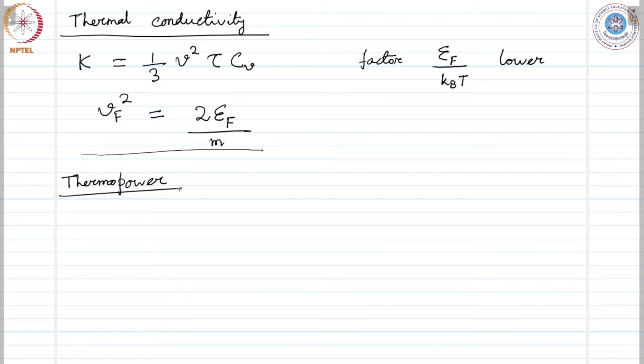From the expression of specific heat we can write the expression for thermo power as minus pi squared over 6 k b over e k b t over epsilon f.